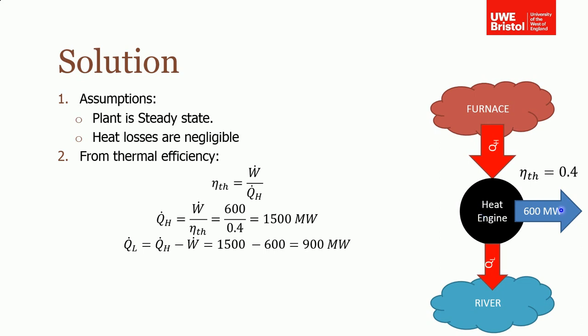What goes in must come out. We know that 1500 megawatts goes in, 600 megawatts comes out as work, so the remainder, the remaining 900 megawatts, must be rejected to the river. The amount of heat rejected is 900 megawatts.